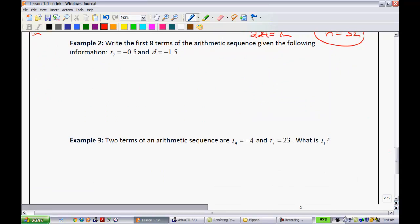So now, let's write the second example. It says write the first 8 terms of an arithmetic sequence given the following information. It says the 7th term is negative 0.5, and it tells you the common difference is negative 1.5. And so this one, I'm going to take a non-algebraic way of going about it, and we're going to write ourselves a picture.